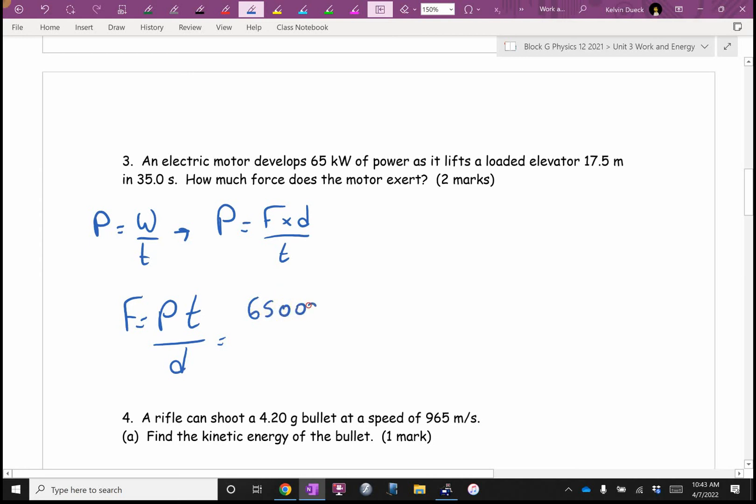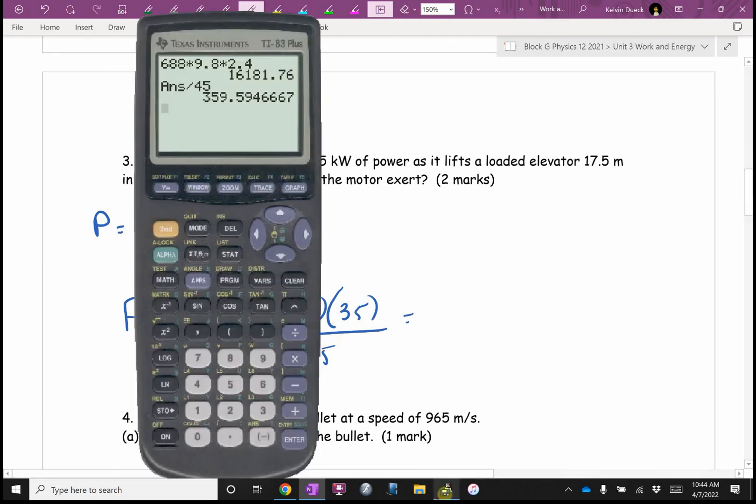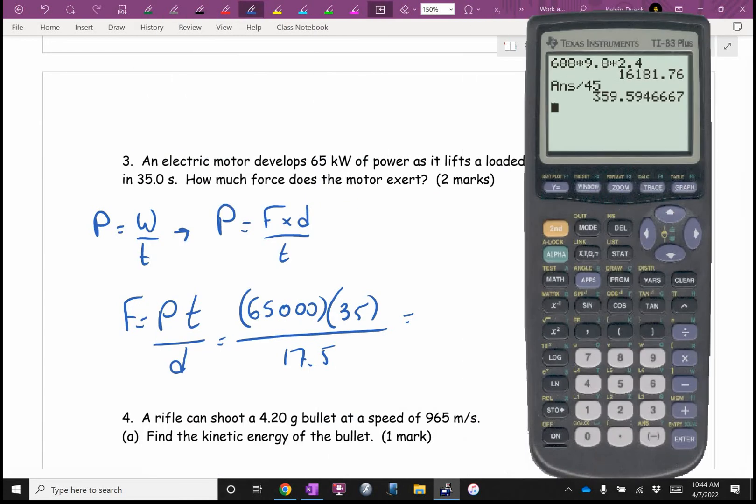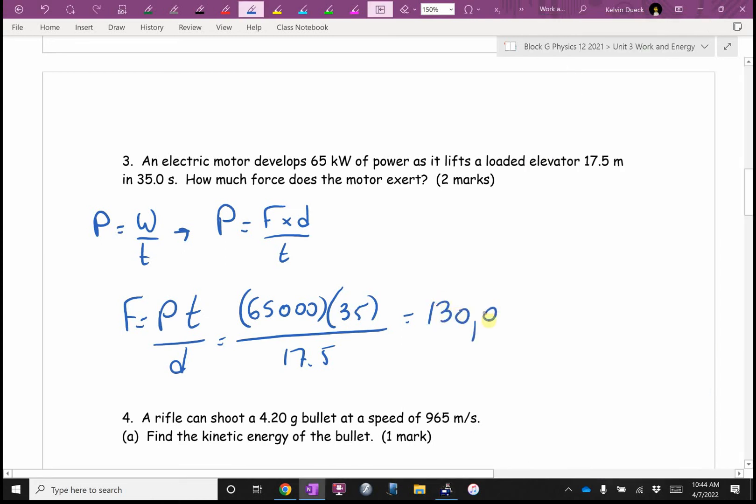It's 65 kilowatts. That's 65,000 watts. 35 seconds divided by 17.5. I think it's actually works out evenly, doesn't it? I think it's going to be 130,000. And that would be newtons.